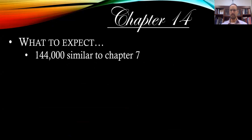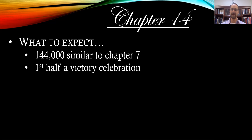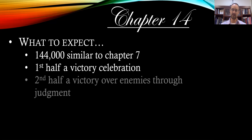What to expect? We have another reference to 144,000 in heaven, similar to Chapter 7. Remember, this 144,000 is a multiple of 12, and 12 represents the entire Christian church, Old Testament and New Testament. So don't think of a literal number again, just like all the rest of the numbers in the book of Revelation aren't literal. The first half of the chapter is a victory celebration. The second half is also a victory, but specifically a victory because the enemies of God are going to be shown the way to judgment.